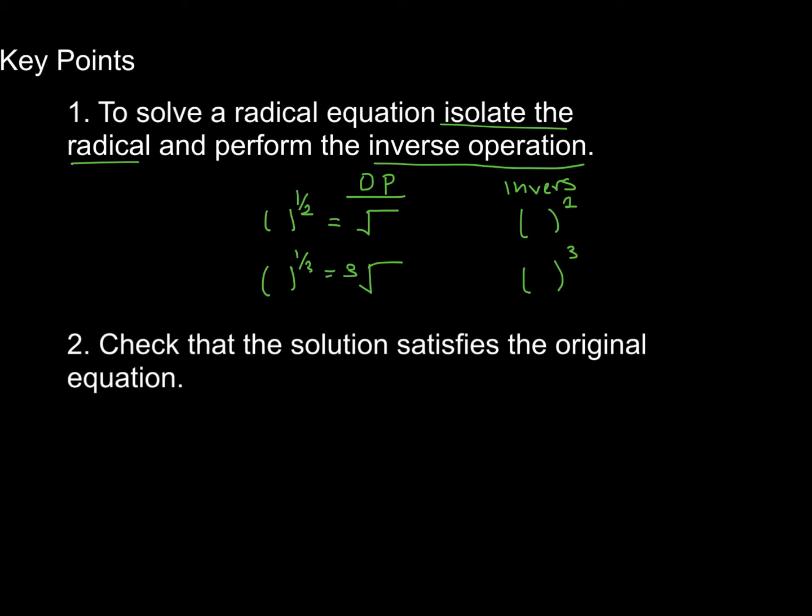And then once you've done that, you want to check that your solution satisfies the original equation. So let's just do one more quick example together. Okay, so here's an example. What I'm going to try and solve for is the variable such that when I add 3 to it and take the square root and then subtract 6, I will get 3.